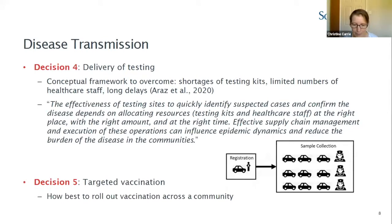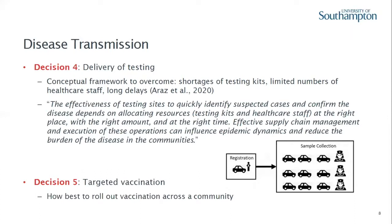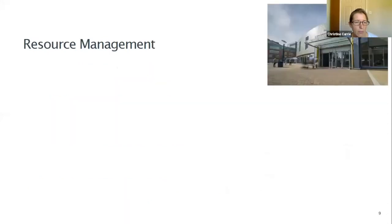Decision five was targeted vaccination — optimistic at the time since no vaccines had arrived yet, but modeling how best to roll out vaccination across the community and optimize its effectiveness. Duncan Robertson has plans to move this forward.